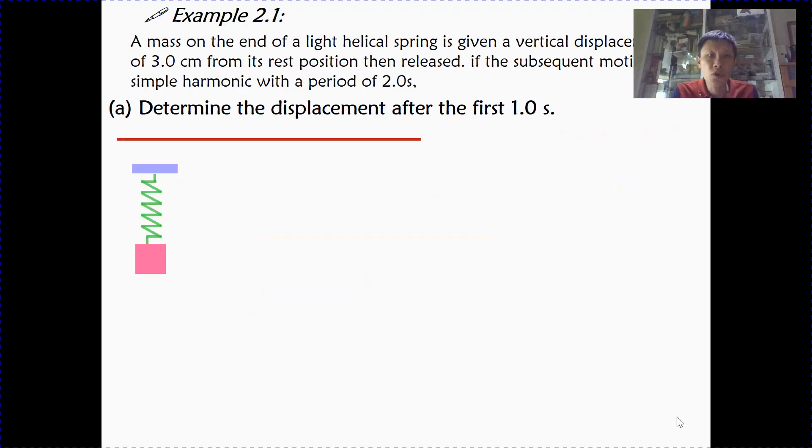Now let's look at example 2.1. We have a mass on the end of a spring and it is initially given a vertical displacement of 3 cm from its rest position and released. So rest position is the equilibrium position. Now you are told that if the subsequent motion has a period of 2 seconds, what would be the displacement after the very first second?